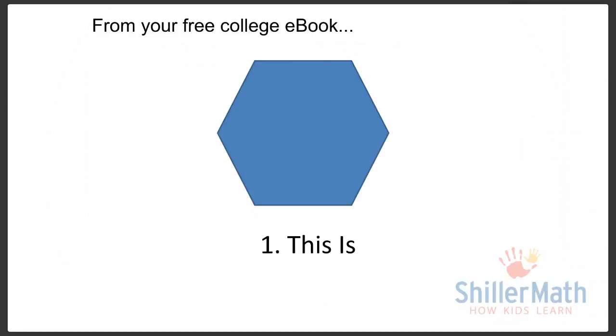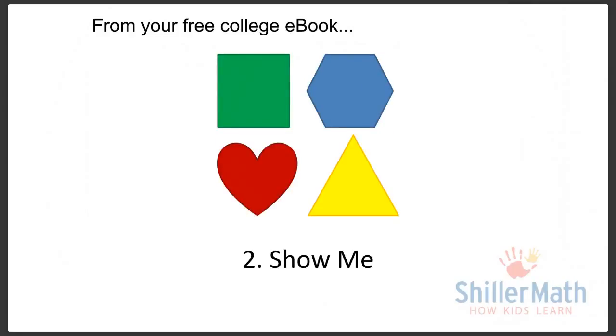The second period or step is 'show me.' Now that the thing has a name, it's time to build recognition of that thing and association with other things. So again, they've explored. We'll place several shapes in front of the child and ask, 'Can you show me a hexagon?' Usually the child will point at the hexagon,